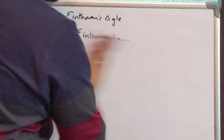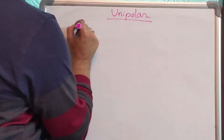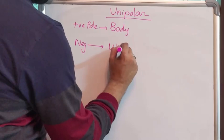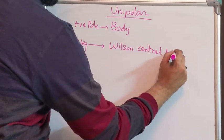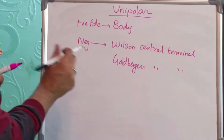More about it when we talk about axis. So now coming to unipolar leads. When I say unipolar leads, what do I mean? I mean that the positive pole is connected to the body of the patient. And the negative pole is formed by either a Wilson's Central Terminus or Goldberger's Central Terminus.